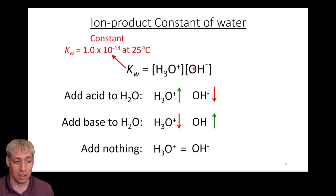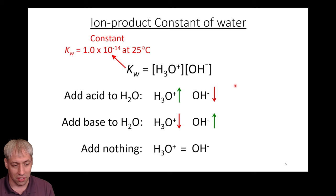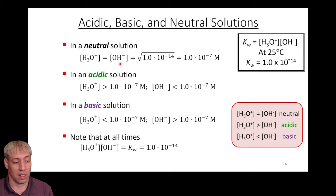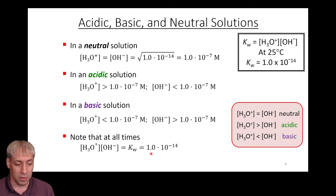If H3O⁺ goes up, OH⁻ goes down, and vice versa — that's how we define acidity. At room temperature, if Kw = 1×10⁻¹⁴ and H3O⁺ equals OH⁻, then X² = 1×10⁻¹⁴, giving X = 1×10⁻⁷. If H3O⁺ is greater than 1×10⁻⁷, the solution is acidic; if less, it's basic; if equal, it's neutral. We are always fixed by H3O⁺ × OH⁻ = Kw = 1×10⁻¹⁴ at room temperature.